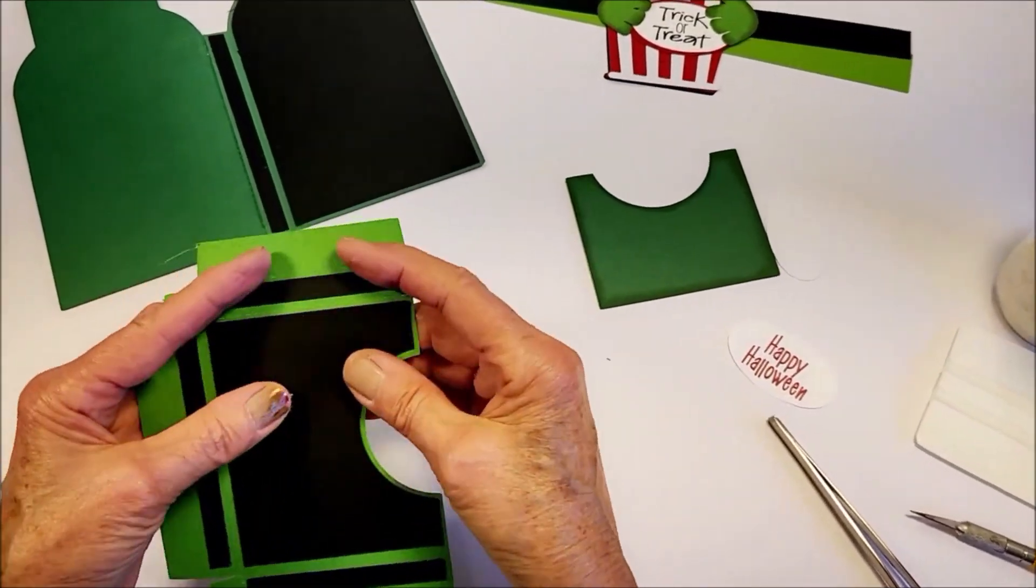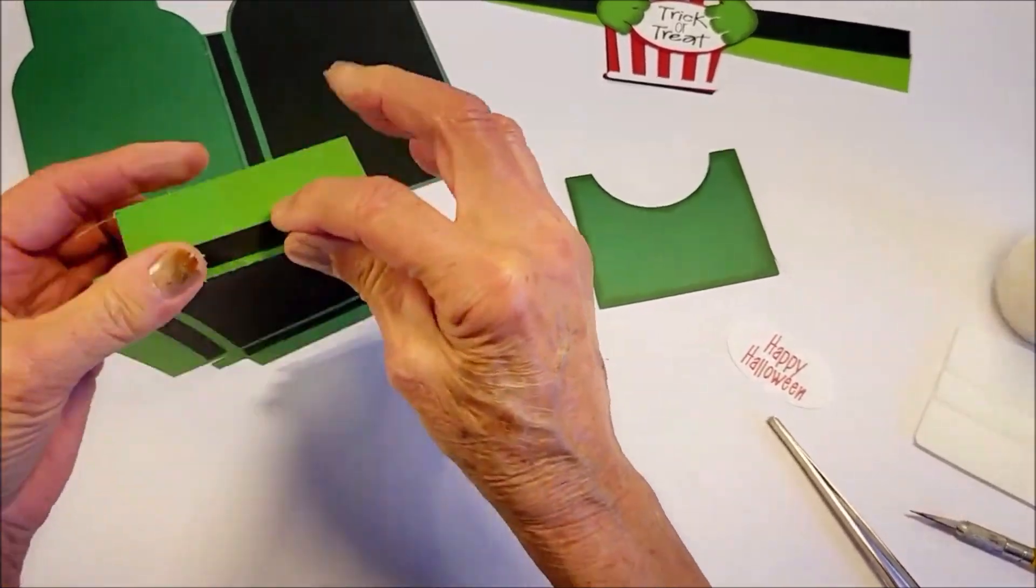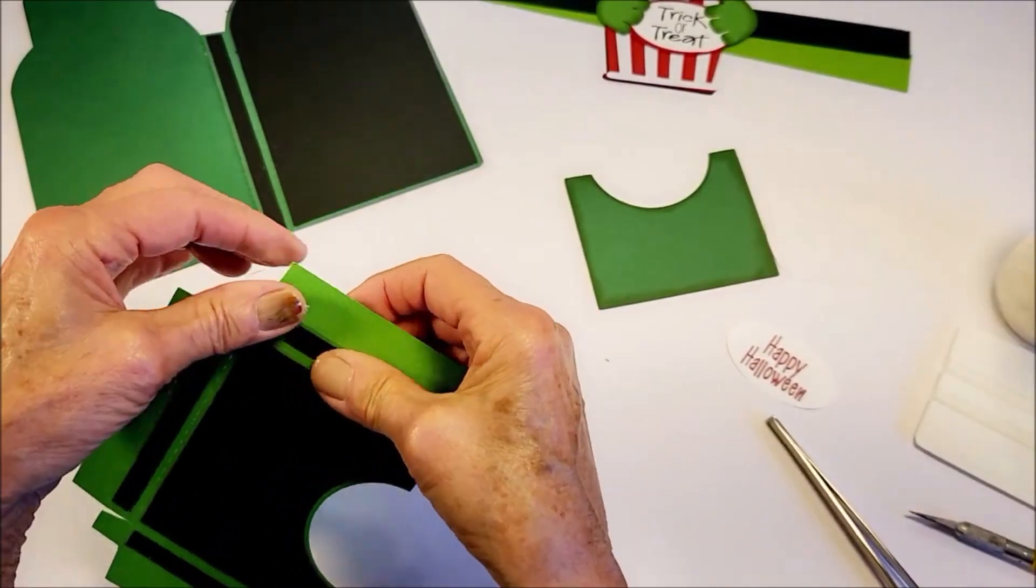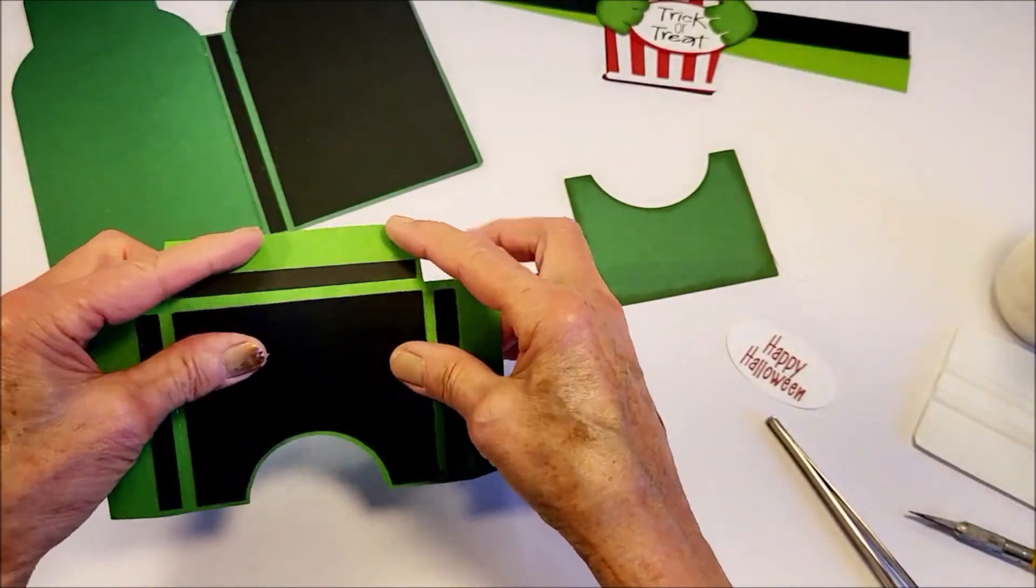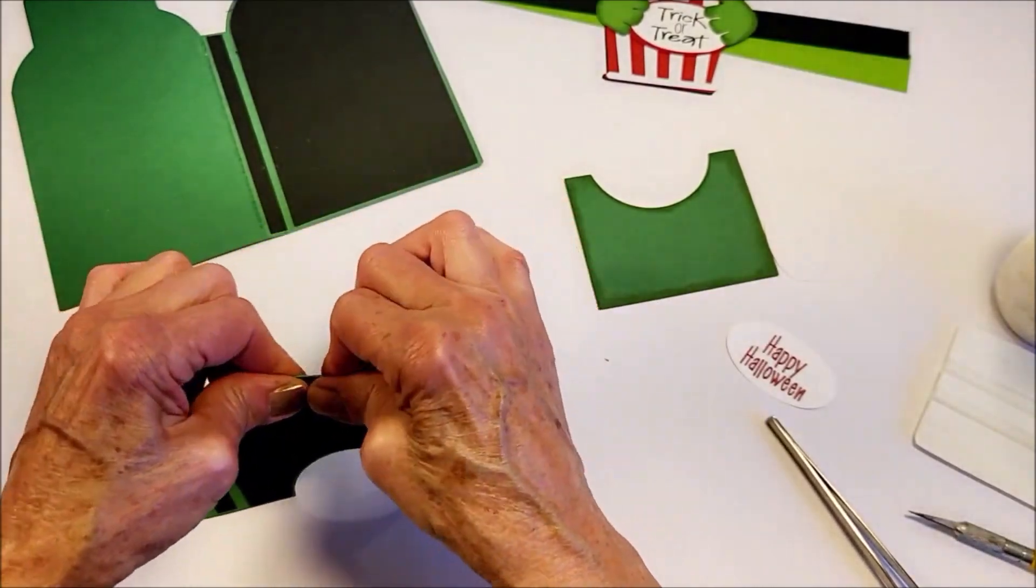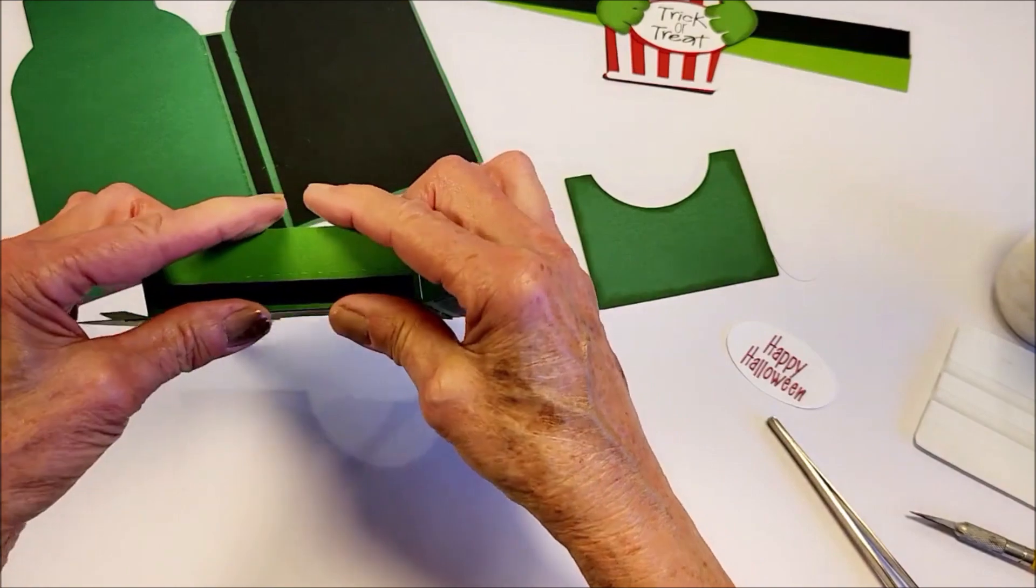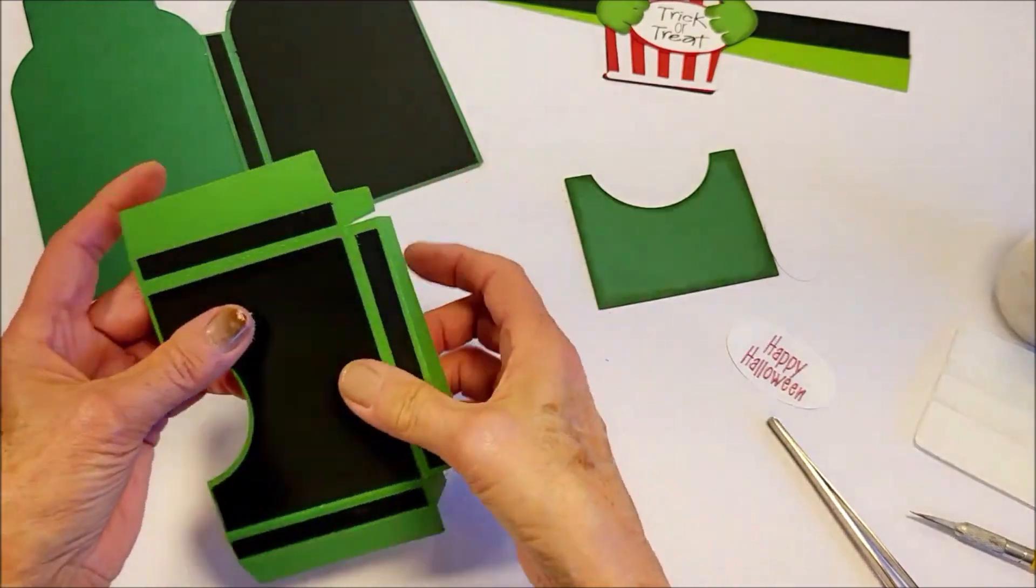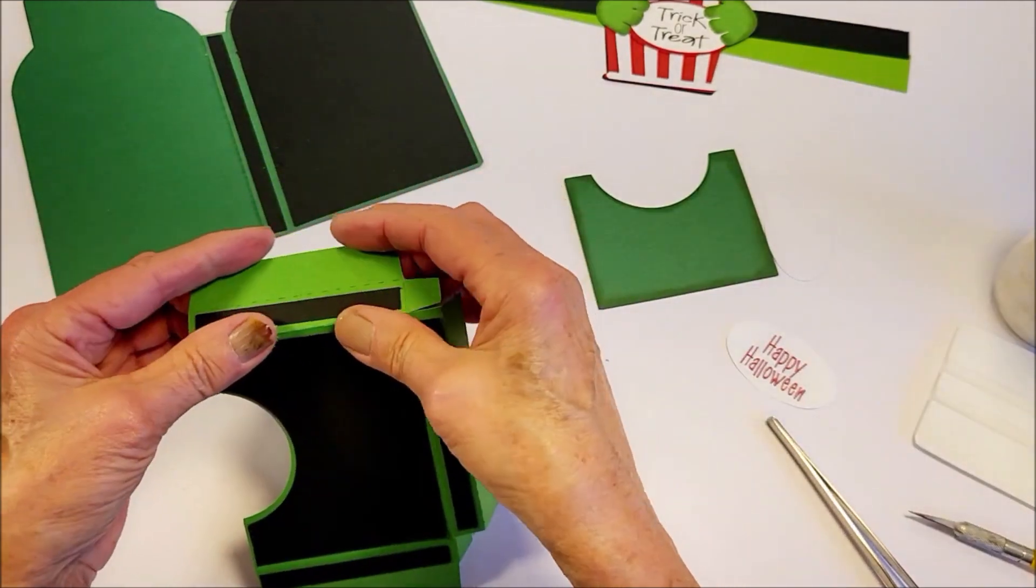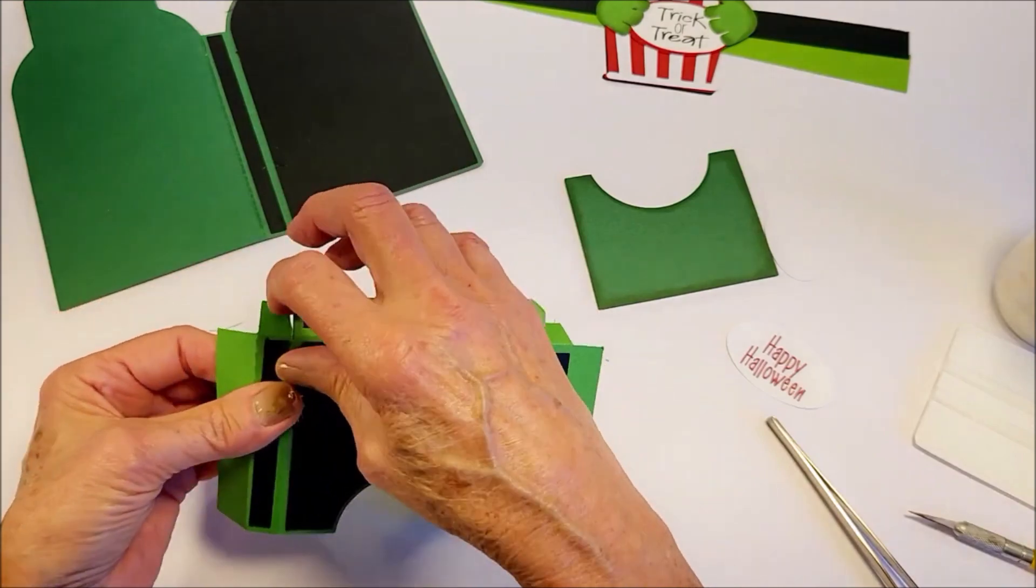Okay, so now I'm going to go through and I'm going to fold on all the score lines. You can do this before or after adding the decorative panels. Sometimes I do it beforehand, it makes it easier sometimes to line up those panels. But just go ahead and fold on all those score lines.